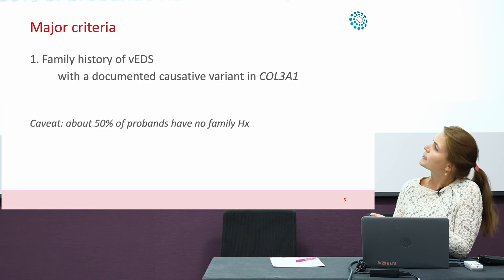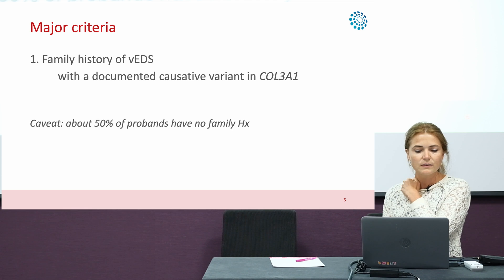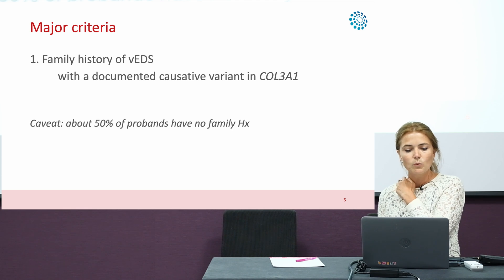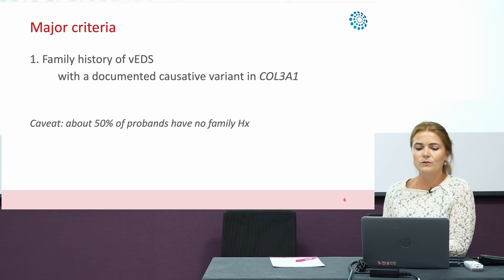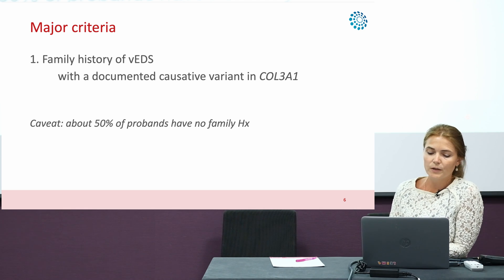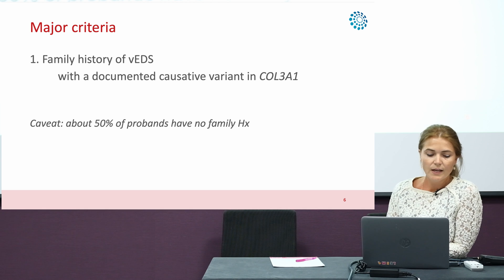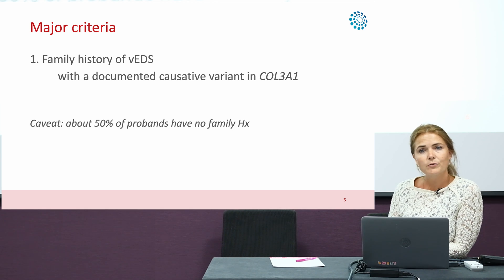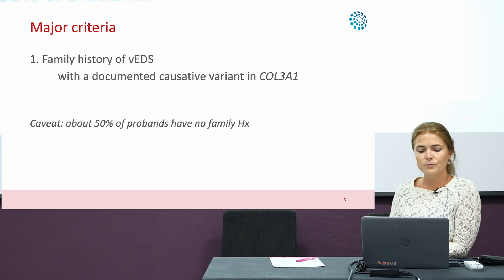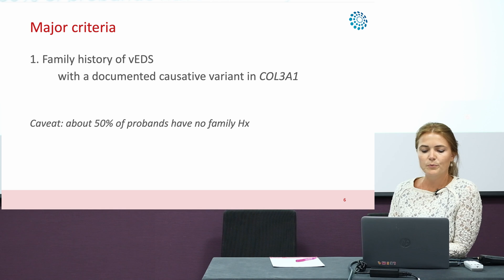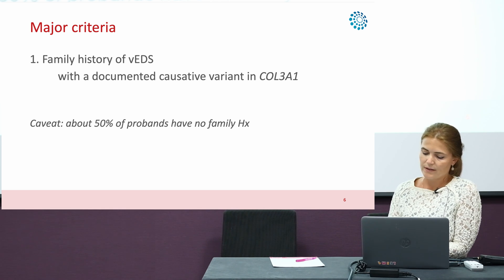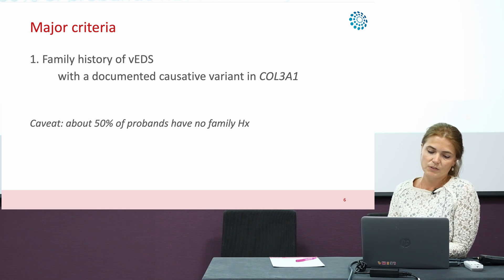The first major criterion is a family history of vascular EDS with a documented causative variant in the COL3A1 gene. However, we have to be careful because about 30 to 50% of probands actually have no family history and the mutations are de novo.